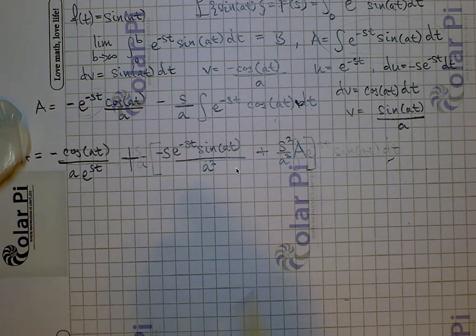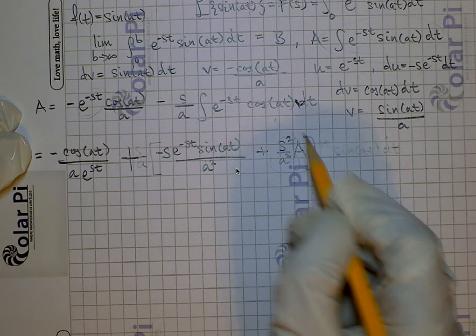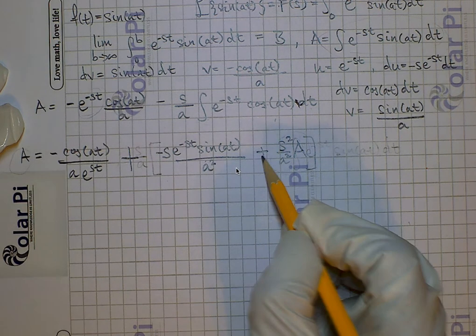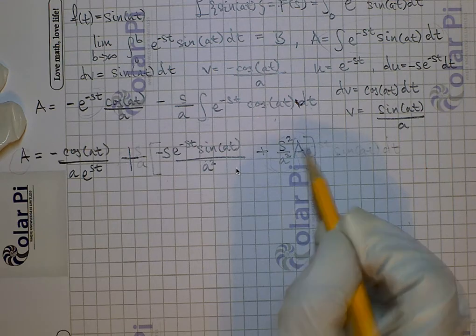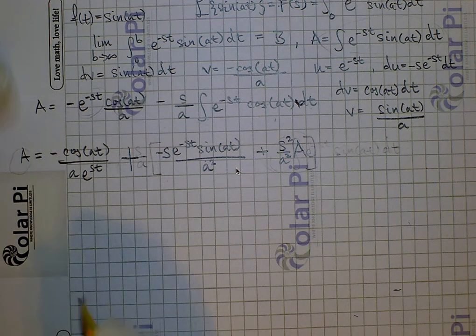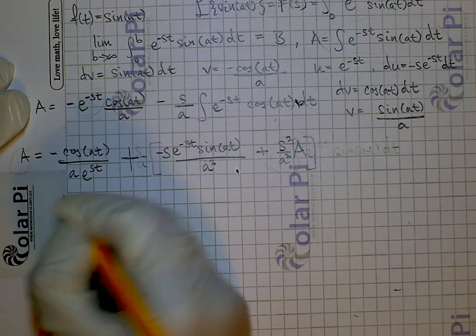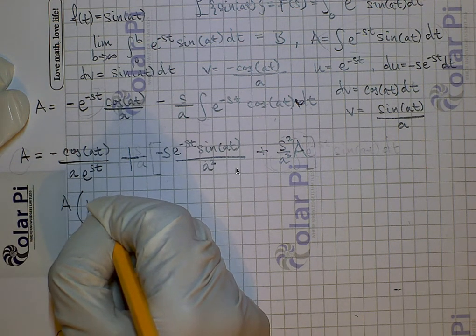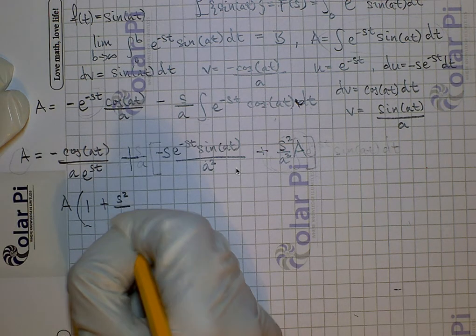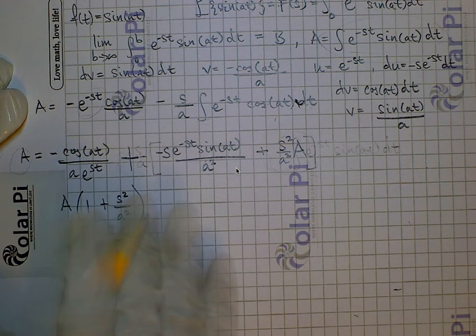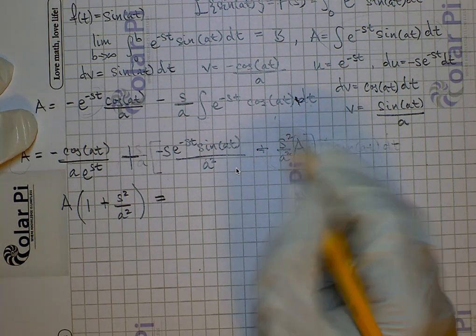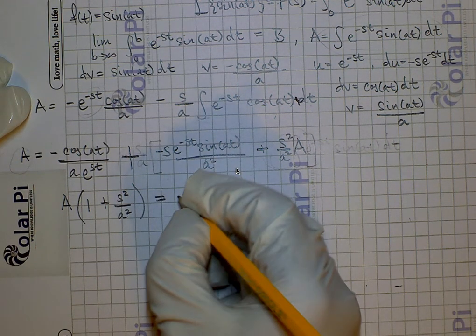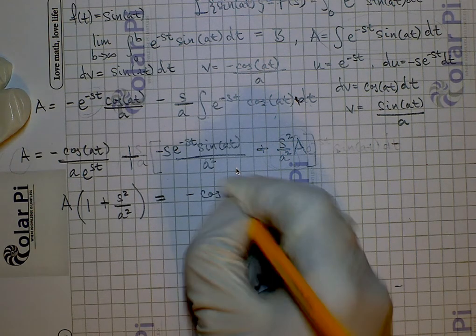I see that I have capital A on both sides of this equation and a term with no t in it. So I'm going to add s squared over a squared times capital A to both sides. When I do, the left side becomes A times the quantity 1 plus s squared over a squared, and since I've added this to both sides, the minus s squared over a squared times A term on the right is gone.